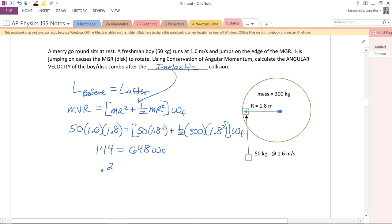And quite simply enough, you then divide, and get 0.22 radians per second equals omega final. All done.